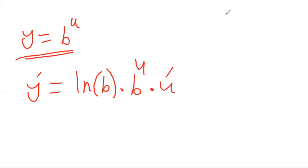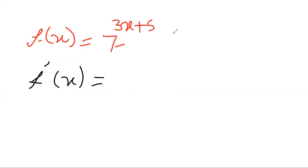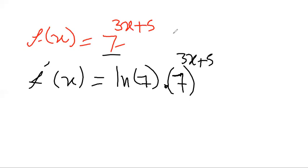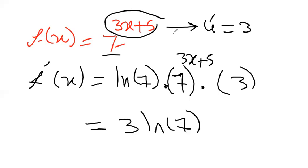For example, let f(x) = 7^(3x plus 5). The derivative is ln(7) times 7^(3x+5) times the derivative of (3x+5), which is 3. Simplified: 3·ln(7)·7^(3x+5).